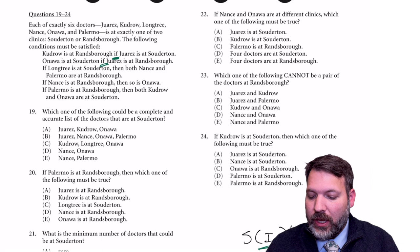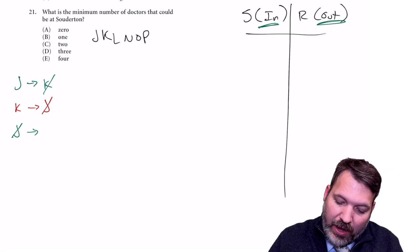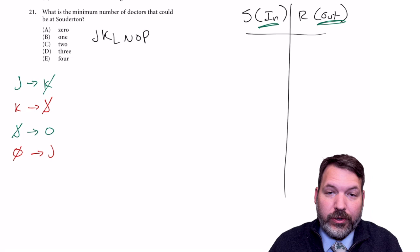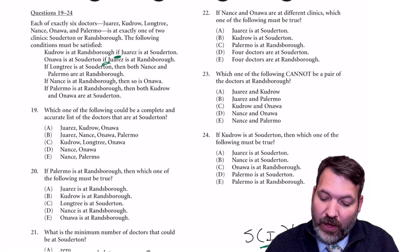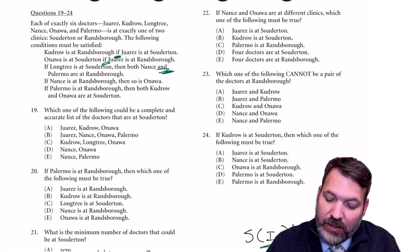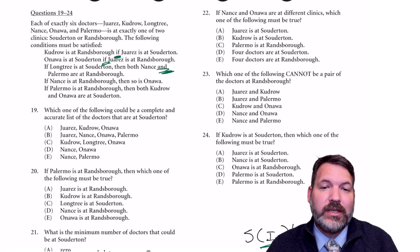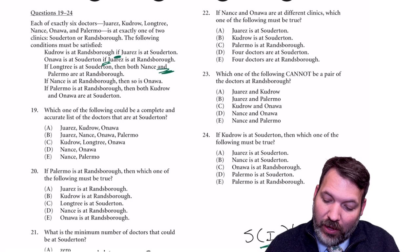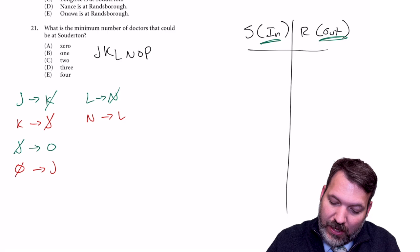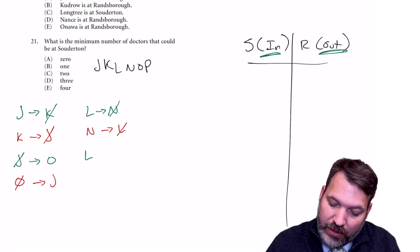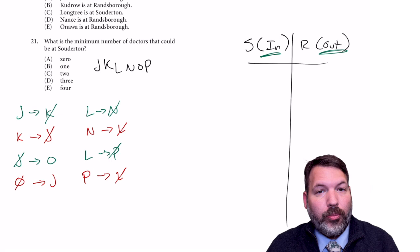Second clue: if J is out, O is in. Contrapositive: if O is out, J is in. Third clue — is it splittable? 'If L is in, then both N and P are out.' AND follows 'then,' so it follows the arrow — this IS splittable. So: if L is in, N is out (contrapositive: if N is in, L is out) AND if L is in, P is out (contrapositive: if P is in, L is out).